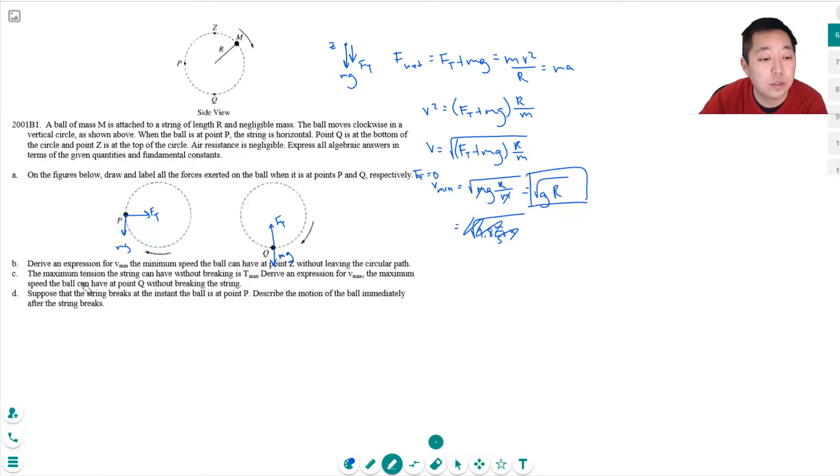Just express everything in terms of variables. The maximum tension the string can have without breaking is T max. Derive an expression for V max, the maximum speed the ball can have at point Q without breaking the string.